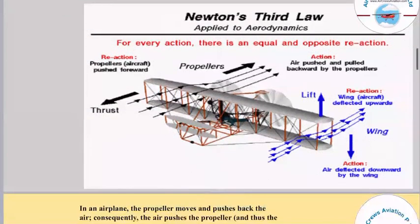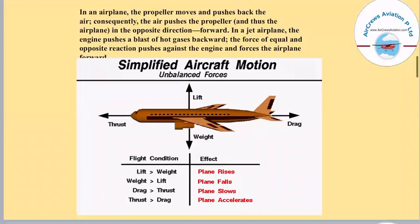In an airplane, the propeller moves and pushes back the air; consequently, the air pushes the propeller and thus the airplane in the opposite direction, that is forward. In a jet plane, the engine pushes a blast of hot gases backward. The force of equal and opposite reaction pushes the aircraft forward. The forces of the aircraft in steady level flight are lift, weight, drag and thrust.